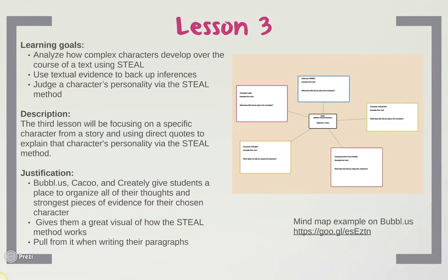Lesson three. The learning goals of lesson three are analyzing how complex characters develop over the course of a text using STEAL, use textual evidence to back up inferences, and judge a character's personality via the STEAL method. The third lesson will focus on a specific character from a story using STEAL. As a class we will go back through 'The Contents of the Dead Man's Pocket' and pick the strongest pieces of text that show the elements of STEAL. These pieces of text will be organized into a mind map on the bubble.us website. Students will help explain what each piece of text tells us about the main character. Students will then do the same with a character from one of the four stories they read, using bubble.us, Cuckoo, or create.ly, and then share their mind maps with me for feedback.